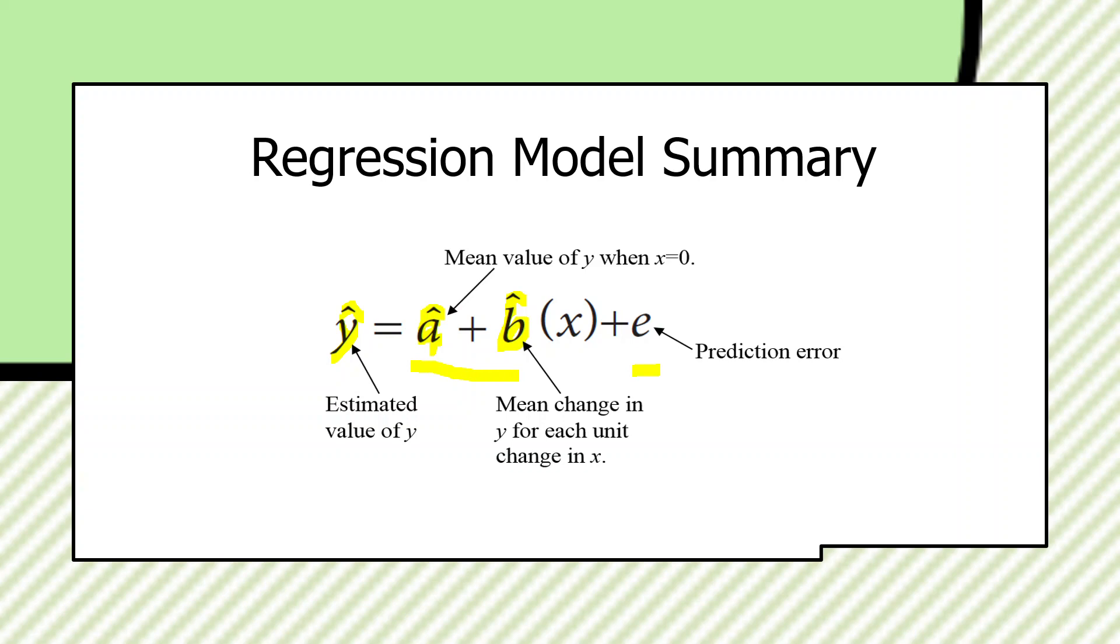And then, of course, prediction error here is represented by E because the formula wasn't perfect. There was some error involved in the predictions.